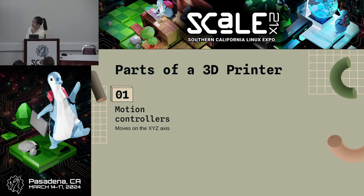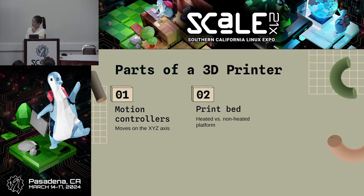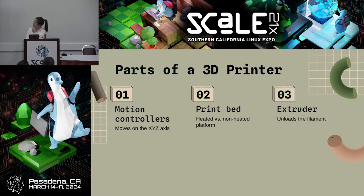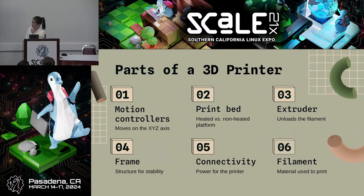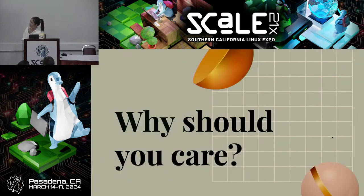There are six basic parts of a 3D printer. First, the motion controllers — the printer moves on an XYZ axis, so it can go left, right, and up. Then the print bed, where the filament is deposited; it's typically heated so the filament sticks, and cools when the print is done. Next is the extruder, the frame for structure and stability, connectivity, and finally the filament itself — the material used to print your design, often plastic.